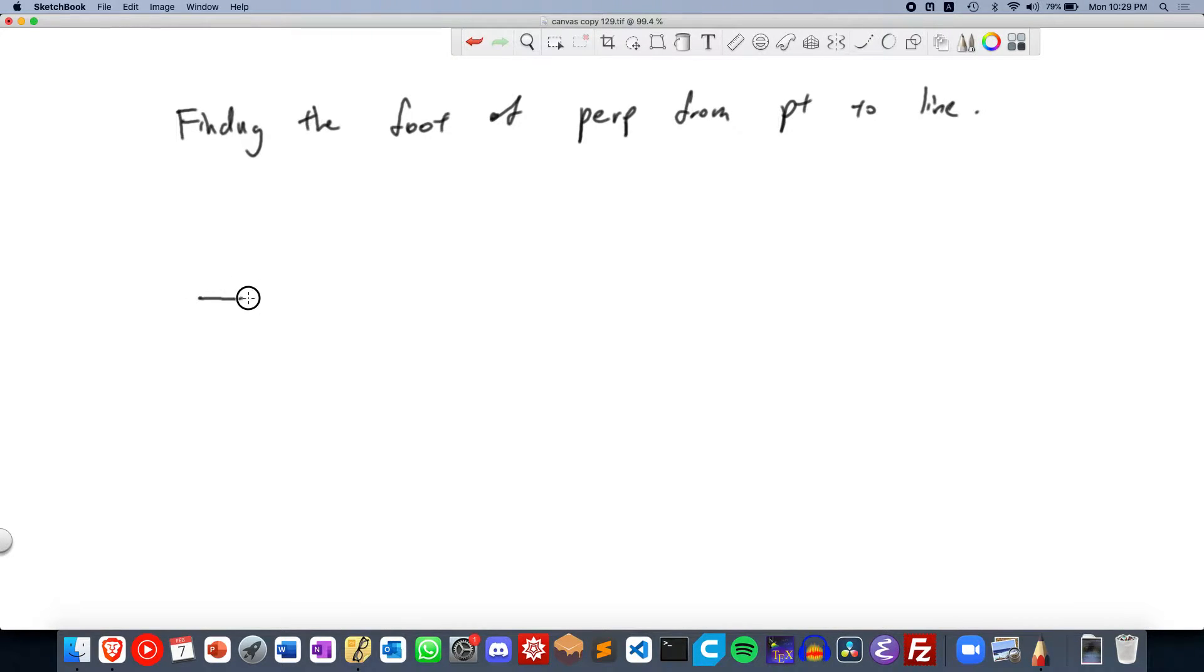So the question statement is like this. Let's say we are given a line and let's call it line L. Then let's say we are given a point C. How do we find the projection of this point C onto the line L such that this is perpendicular? So let's call this F.